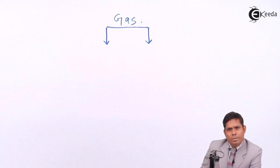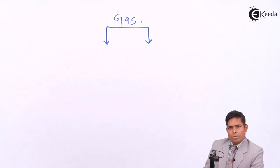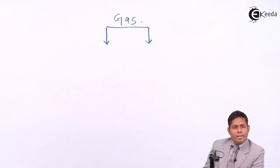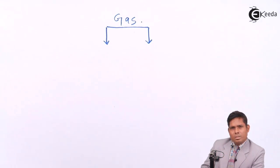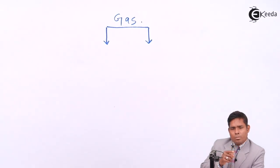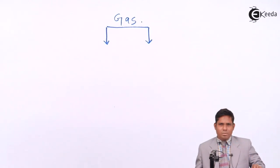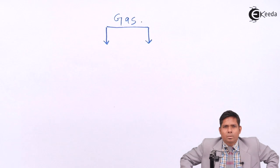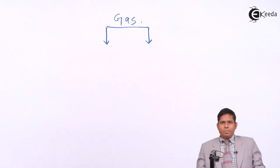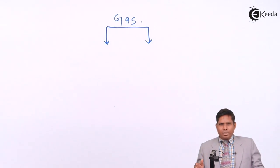We will keep pressure constant and see how much heat is required to raise the temperature of the gas at constant pressure. If you keep pressure constant and raise the temperature, then how much heat is required for unit rise in temperature — that is called the specific heat of the gas at constant pressure.